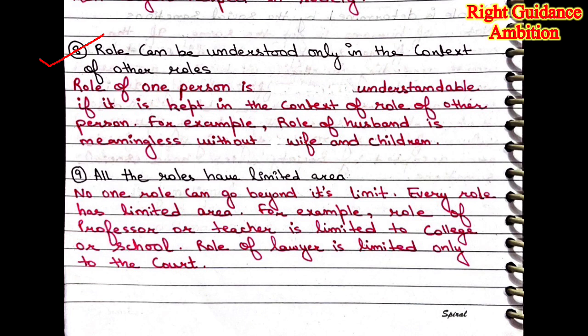For example, the role of husband is meaningless without the wife and children. So if we want to see the role of a husband, we cannot separate his family — his wife and his children. Whatever roles are connected with him, we need to study them together. All roles have a limited area; no one can go beyond its limit. For example, the role of professor and teacher is limited to college and school, and the role of lawyer is limited only to the court.